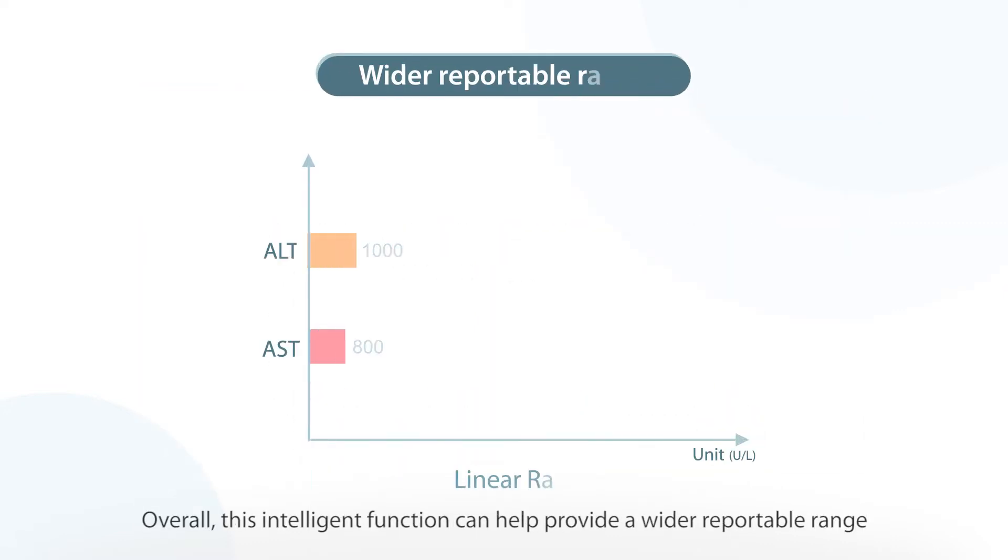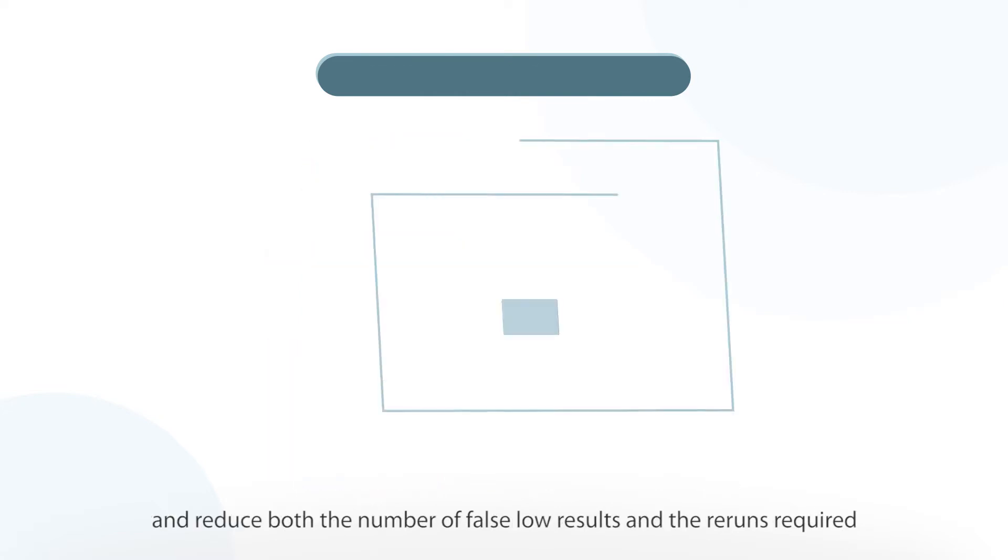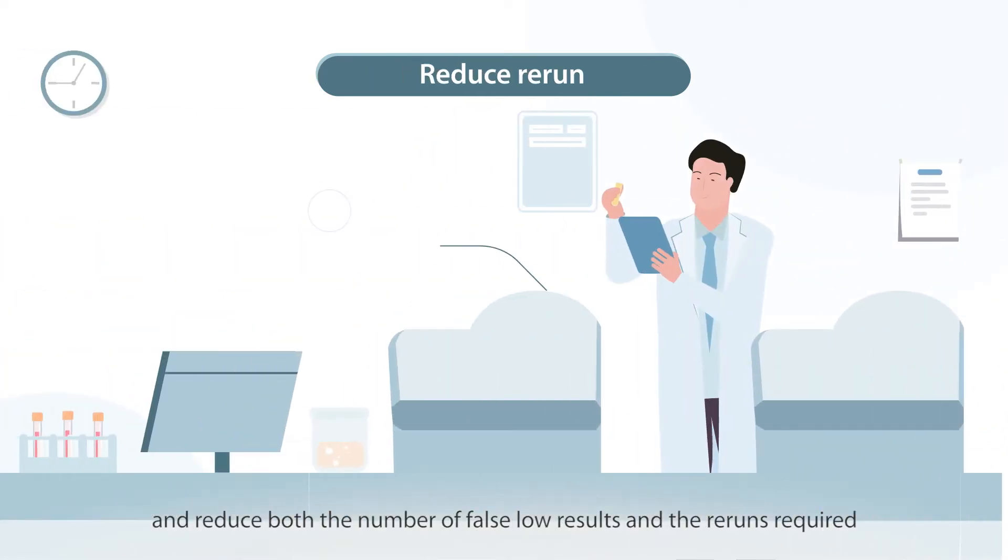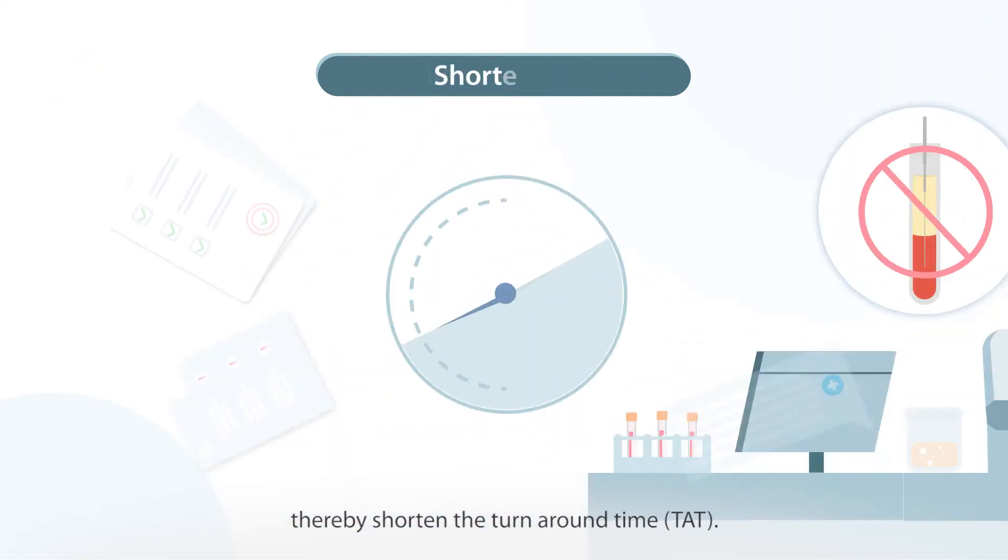Overall, this intelligent function can help provide a wider reportable range and reduce both the number of false low results and the reruns required, thereby shortening the turnaround time.